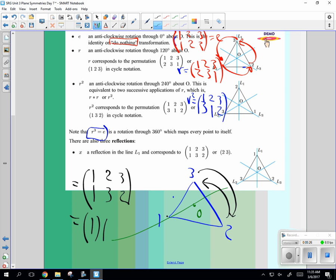So we could write this as a cycle as what? 1 goes to 1, 2, 3. Or, what's a shorter way of doing it? When we have a 1 goes to 1, can't we just leave it out? 2, 3, right?